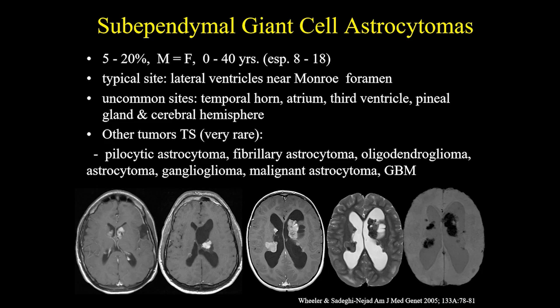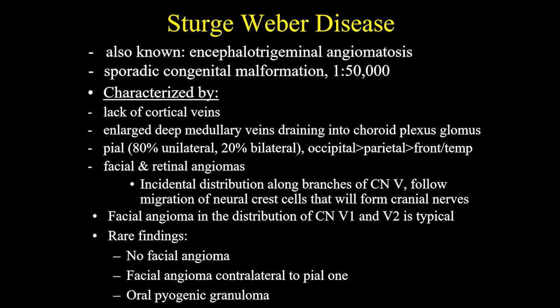5 to 20% of patients can have subependymal giant cell astrocytoma. Typically, it is located in the lateral ventricles near the foramen of Monro. Uncommon sites have been described in the temporal horn of the ventricles, atrium, third ventricle, and pineal gland, as well as in the cerebral hemisphere. Other tumors in tuberous sclerosis are very rare but have been described. Here we have two patients with examples of subependymal giant cell astrocytoma located in the foramen of Monro and also in the lateral subependymal ventricular region, showing some calcification and contrast enhancement.